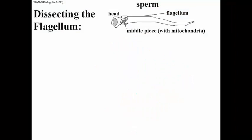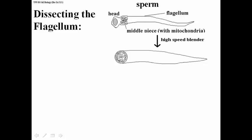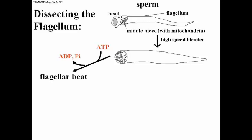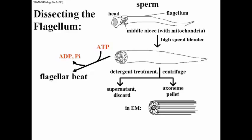You can dissect a cilium or flagellum and analyze the structures inside. Here we have a sperm with various parts shown, but we'll concentrate on the flagellum, which you can pop off using a high-speed blender. What you have is a membrane-bound 9+2 array of microtubules, and this isolated flagellum will actually beat just like a real flagellum if you add ATP. If you then treat with detergents to disrupt the phospholipids of the membrane, you can strip the membrane off and centrifuge. The structures left behind — the axoneme — move to the pellet, while the supernatant retains the phospholipids and membrane components.